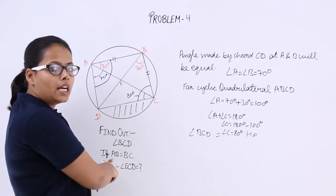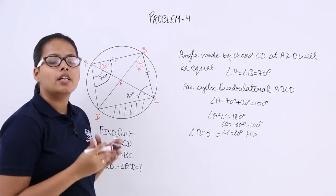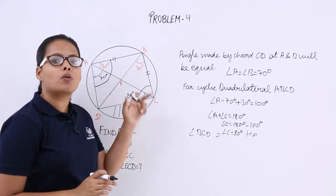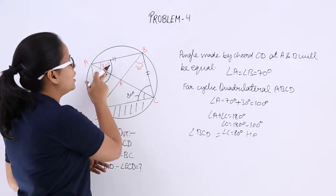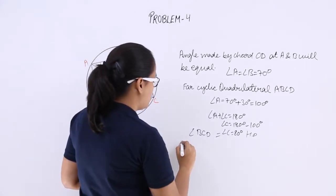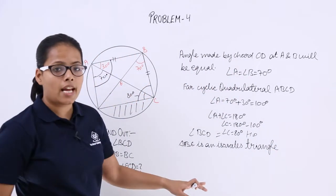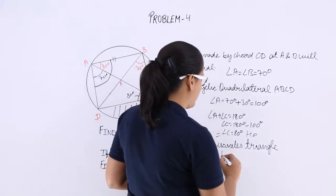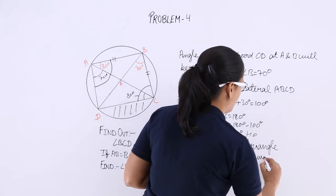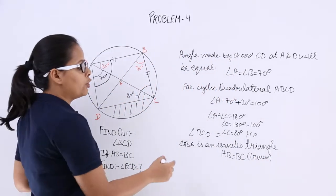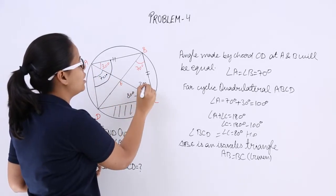Now for the second part, the condition is AB is equal to BC. In triangle ABC, angle ABC is an isosceles triangle because AB is equal to BC — this is given. So from the theorem of an isosceles triangle, opposite angles will be equal. If angle CAB is 30 degrees, then angle BCA will also be 30 degrees.